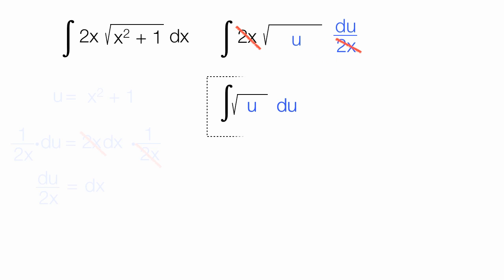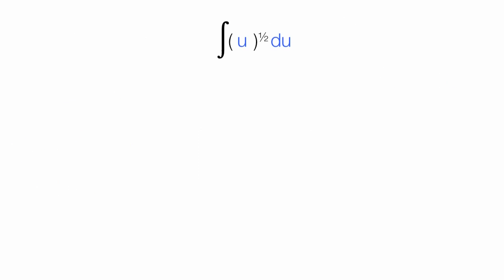Now this looks like something I could integrate. The square root of u is the same thing as u raised to the 1 half power. I have the integral of u raised to the 1 half power, du. I got this in a form that I can actually take the integral of this. I'm going to take the anti-derivative of it.